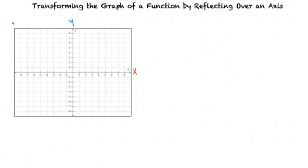When we have a function, every point on the function has an x and a y coordinate. We can reflect a graph over an axis by changing the sign of either the x or y coordinates. First, let's see what happens when we change the sign of the x coordinates. Say we're given the function y equals f of x. We can identify a couple of main points on the graph and make a table just to have an idea of the numbers we will be dealing with.